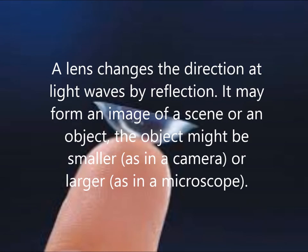A lens changes the direction of light waves by refraction. It may form an image of a scene or an object. The object might be smaller, as in a camera, or larger, as in a microscope.